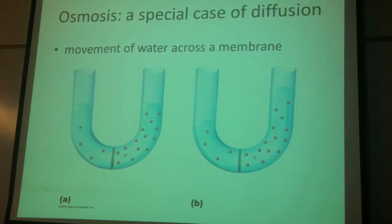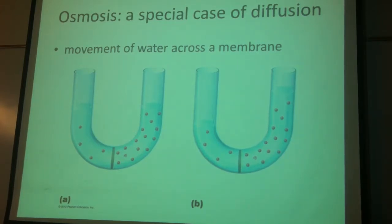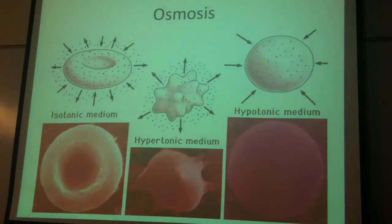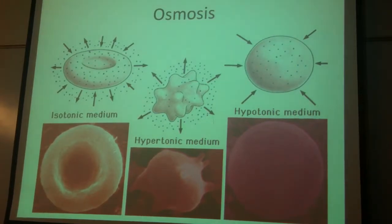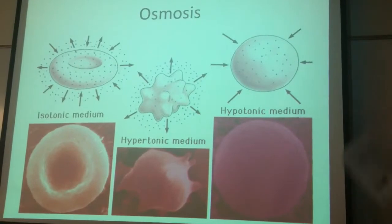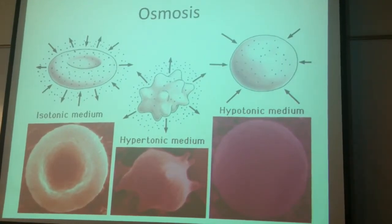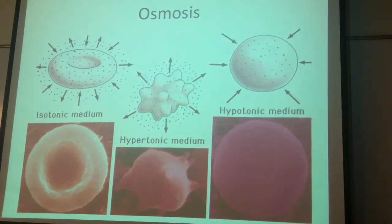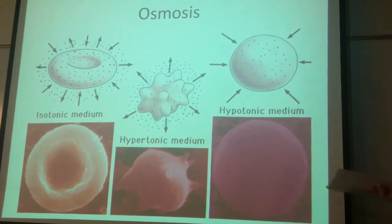Osmosis is just water moving across the membrane, trying to even out the amount of solutes on each side. It's all comparative. If there are the same number of solutes inside as outside, it's isotonic. If there are more solutes outside than inside, it's hypertonic and the cell gives up its water to try and balance that out. If there are more solutes inside than outside, it's a hypotonic solution and all the water rushes in.